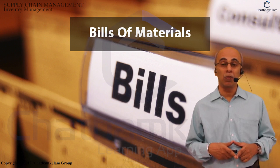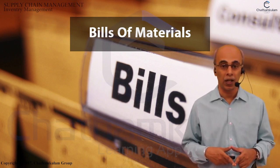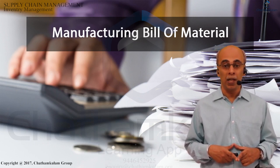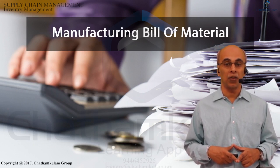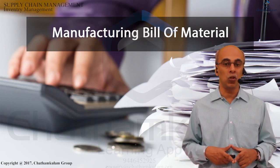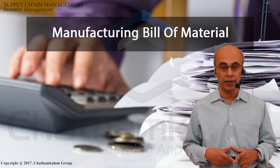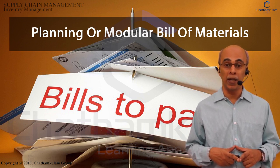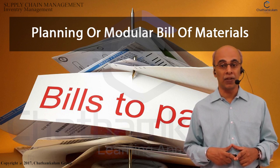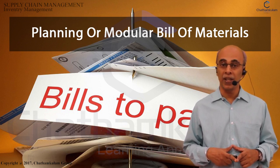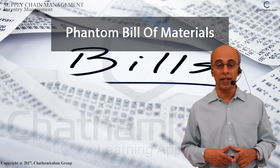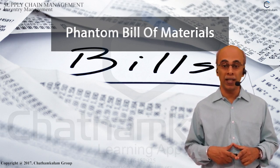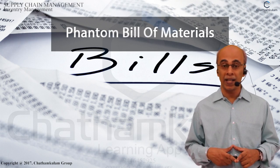The major bill of materials types referred to in inventory management are: the manufacturing bill of materials, created by rearranging the engineering BOM with respect to the assembly process, followed by the generation of process information to prepare a new part for production; the planning or modular bill of materials, which is an artificial grouping of items in BOM format highlighting the relationship of multiple product features, variants, and options; and the phantom bill of materials, which is a fictitious BOM created for common sub-assemblies or kits not intended to be produced as separate items.